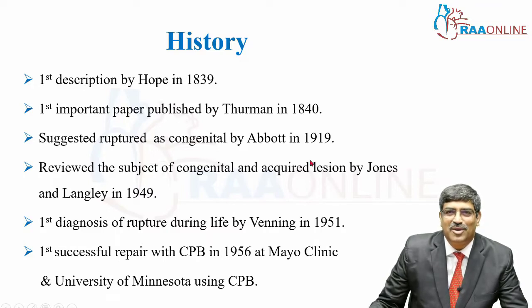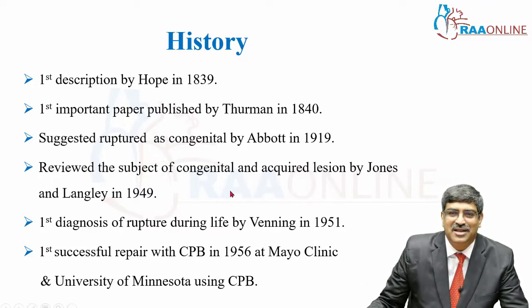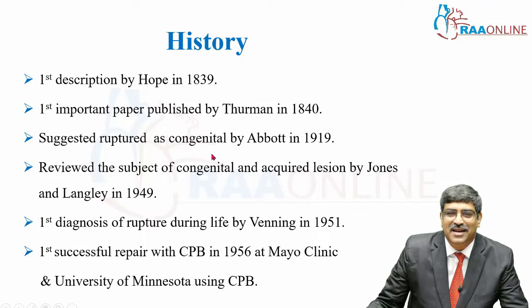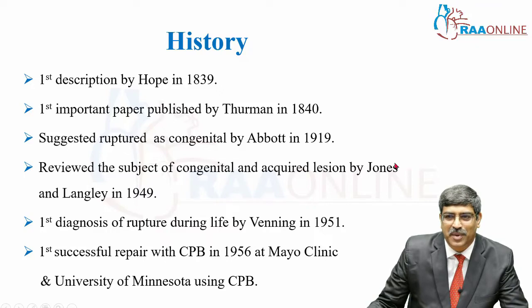There was a slight confusion whether this disease was congenital or acquired. It was suggested as congenital by Hubbard in 1919. Then a detailed analysis of various congenital and acquired lesions of Sinus of Valsalva was made by Jones and Langley in 1949.